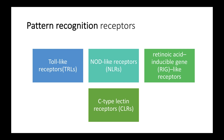Now let us understand about pattern recognition receptors. Pattern recognition receptors or PRRs are proteins that mainly recognize patterns present on pathogens or altered cell molecules. They are capable of recognizing pathogen-associated molecular patterns or PAMPs and danger-associated molecular patterns or DAMPs, which we'll talk about a bit later. There are different types of PRRs: toll-like receptors or TLR, nod-like receptors or NLR, retinoic acid-inducible gene RIG-like receptors, and C-type lectin receptors or CLR. PRRs are similar to fingerprint sensors — they recognize oligosaccharide patterns to identify specific pathogens or altered cell molecules.